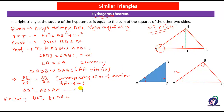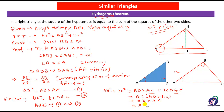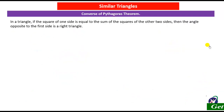Let equation 1 be AB² = AD × AC and equation 2 be BC² = DC × AC. Adding equations 1 and 2: AB² + BC² = AD × AC + DC × AC = AC(AD + DC). Since AD + DC = AC, this equals AC × AC = AC². Therefore AB² + BC² = AC², hence proved.